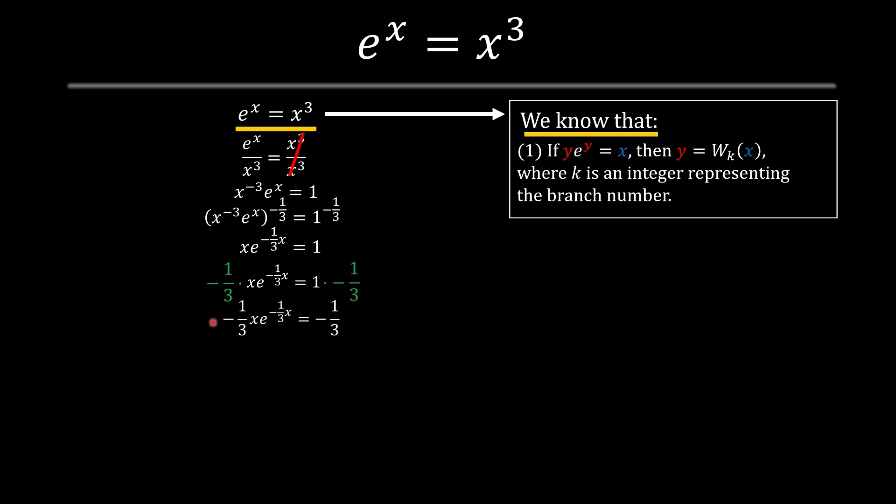And now our y is our negative 1 divided by 3 multiplied by x. So now we're going to apply Lambert W. This gets simplified to just negative 1 divided by 3 to the x as shown over here. Then we're going to divide both sides by negative 1 divided by 3 which in turn would be negative 3. And now we're going to apply the branch number and I'll be explaining this with a graph.